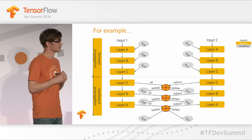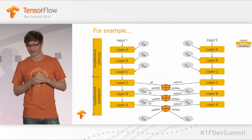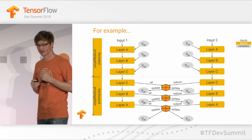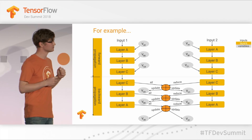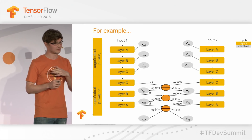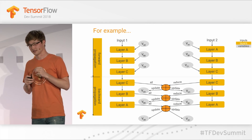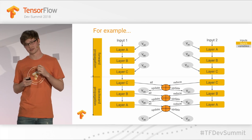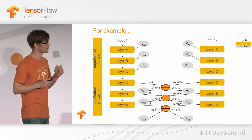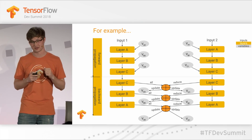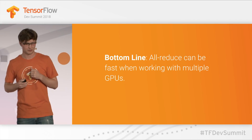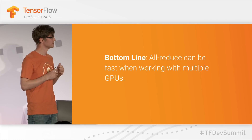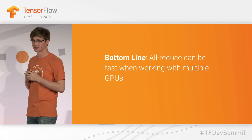So how could all-reduce help us with our models? Consider you have two GPUs — you copy layers and variables onto every GPU and perform the forward pass in parallel. Then during the backward pass, as gradients become available, we use all-reduce to combine those gradients with their counterparts from other GPUs. Gradients from the outer layers are available before those from inner layers, so we can overlap backward propagation computation with all-reduce communication, giving you even more steps per second. When communication between GPUs is reliable, all-reduce can be fast and allow you to scale well.